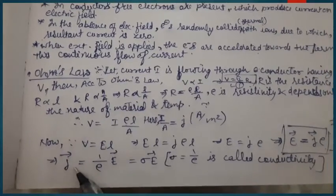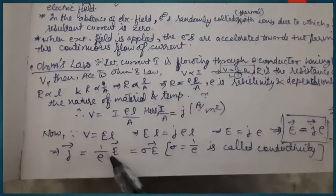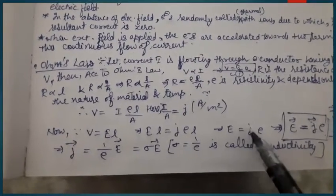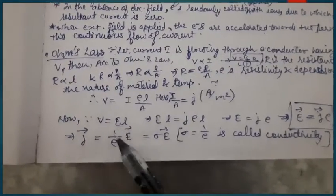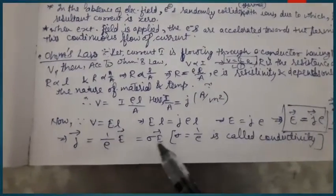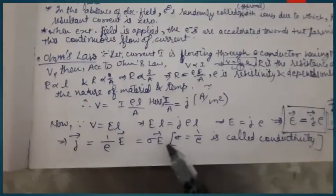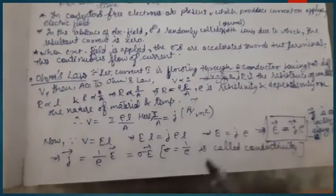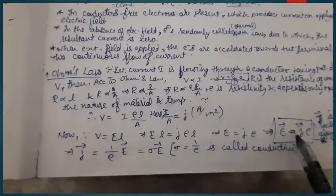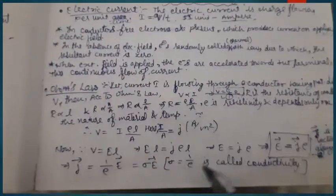Current density J can also be written as E/ρ. One over ρ—the reciprocal of resistivity—is called conductivity, represented by σ. So J = σE. We have obtained several new expressions: J = I/A, E = Jρ, and J = σE—important relations which you may not be familiar with.